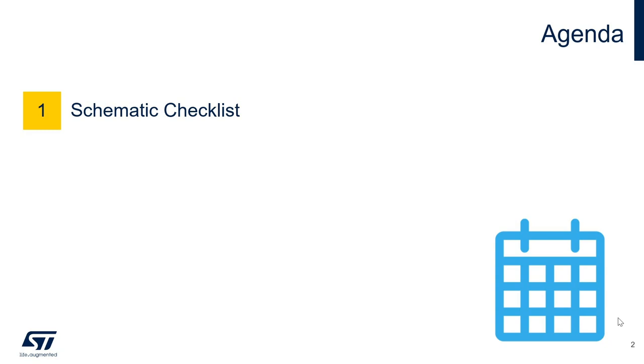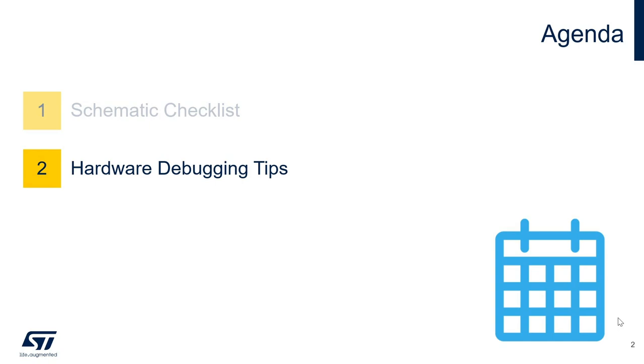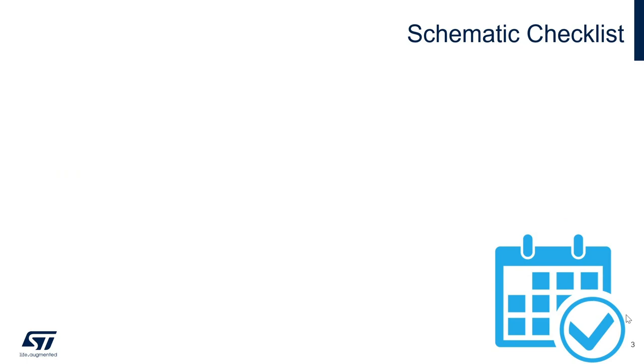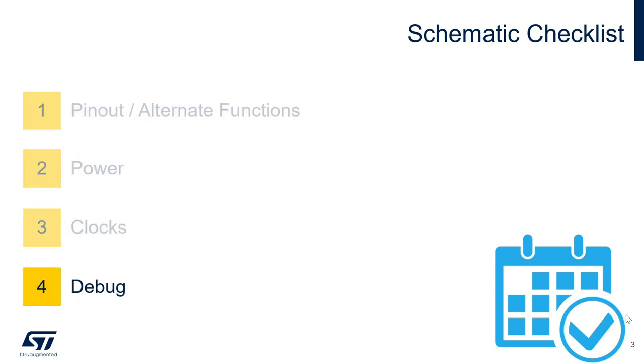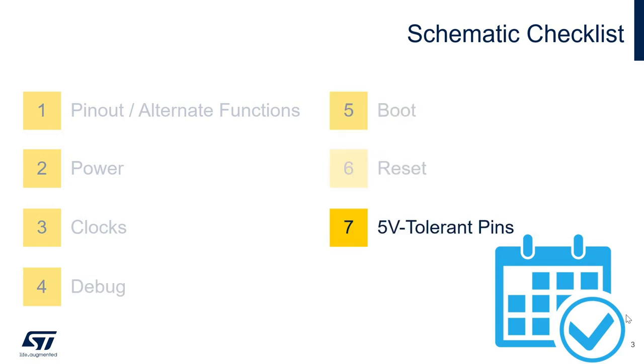In the first part of the video, we will begin by covering approximately half of the schematic checklist, which highlights some key areas to go over when conducting a STM32 schematic review. Then in part two, we will go over the other half of the schematic checklist and finally wrap up this series with a couple of hardware debugging tips. There are a total of seven key areas to cover. In part one, we will discuss pinout and alternate functions, followed by power, clocks, and debug. In part two, we will wrap up the checklist by covering boot, reset, and 5-volt tolerant pins.